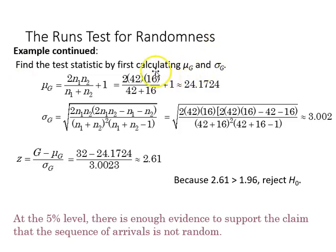The test statistic, based on that, we have to find our mean of runs, which comes out to 24.1724, and our standard deviation of runs 3.002. Using that information, we calculate our test statistic z, which comes out to 2.61. That does fall outside of our confidence interval between 1.96 and negative 1.96.